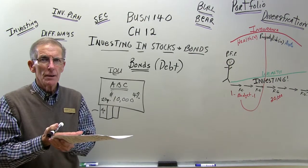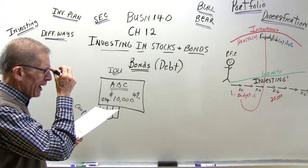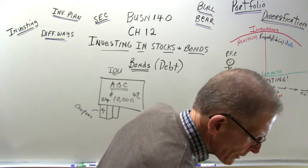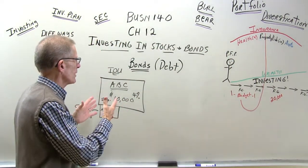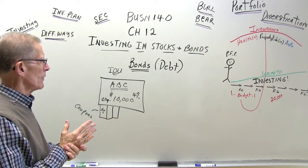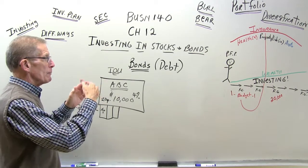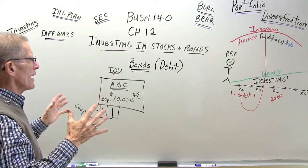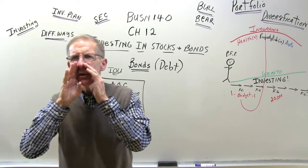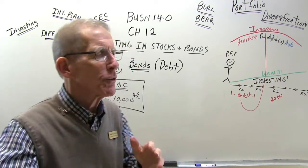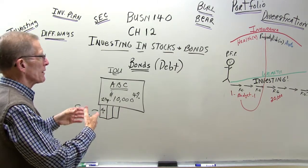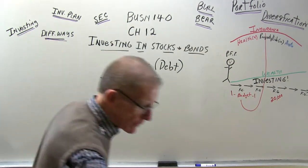What if the business goes belly up — could you lose your bond money? It's possible but not highly likely. When a business fails, its assets are sold to pay off debtors. As a stockholder you'd probably lose your stock. But as a bondholder, bondholders are first in line to receive payment from the liquidated assets of that company. So bonds are pretty safe even if the company goes under.